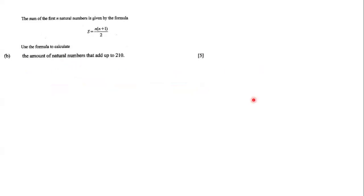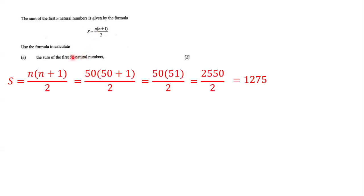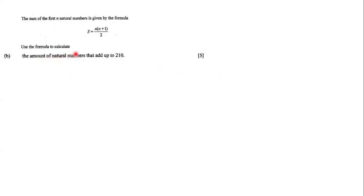Next we have to use the formula to calculate the amount of natural numbers that add up to 210. In this case we have to figure out what n is going to be. Previously we knew n was 50 and figured out S = 1,275, but now we need to find n given that the sum is 210.